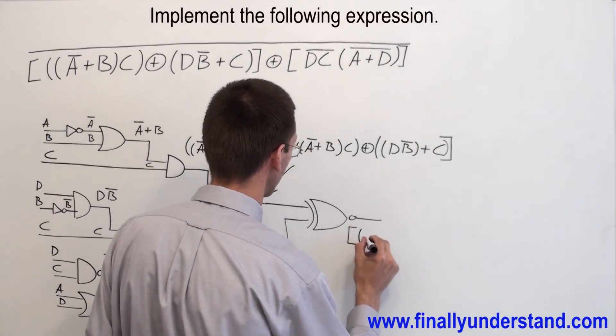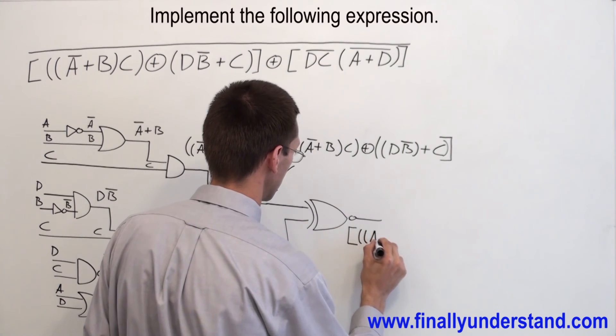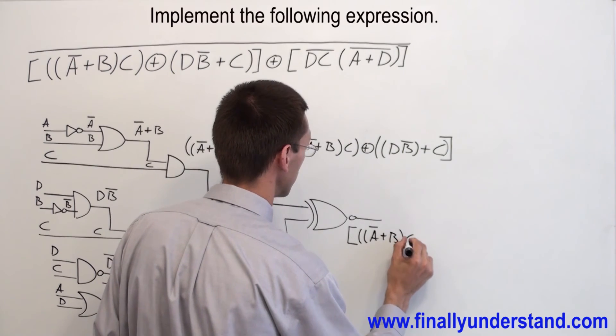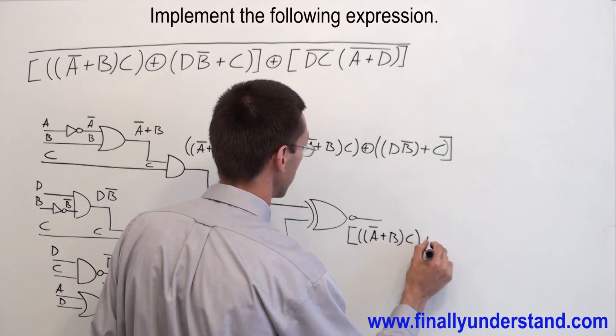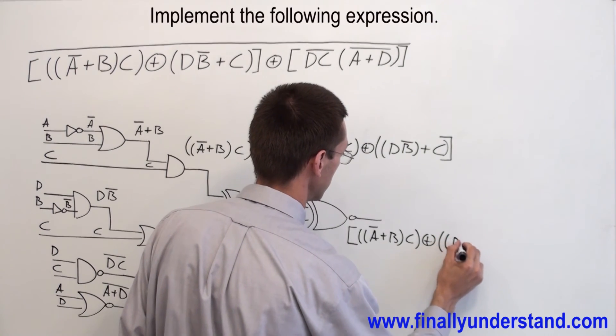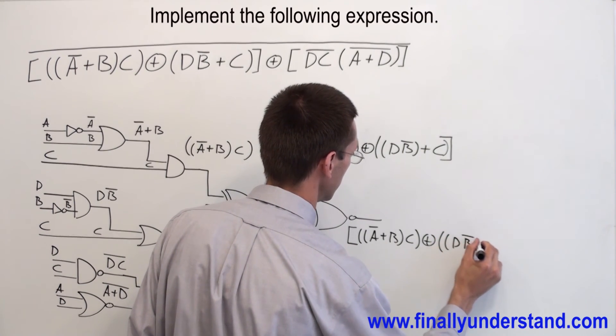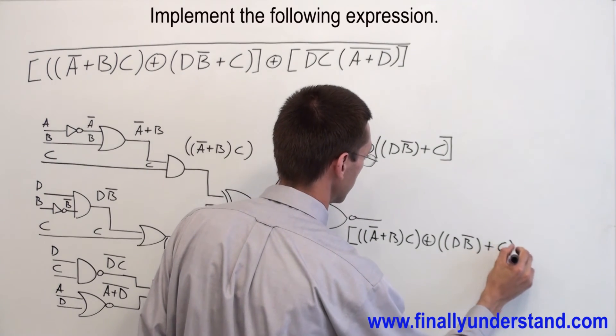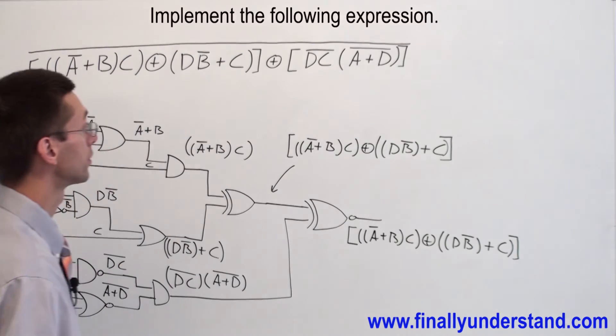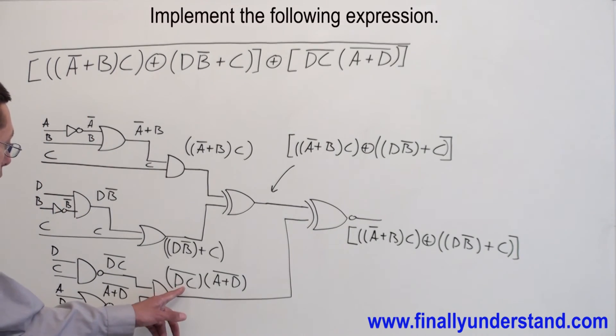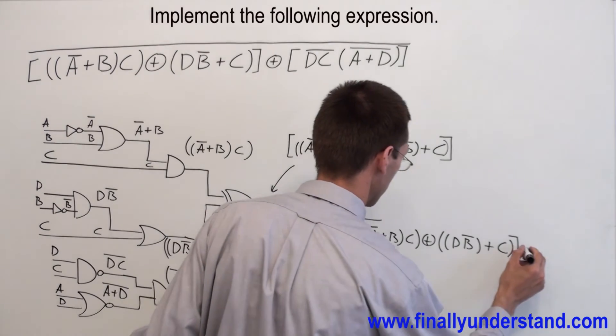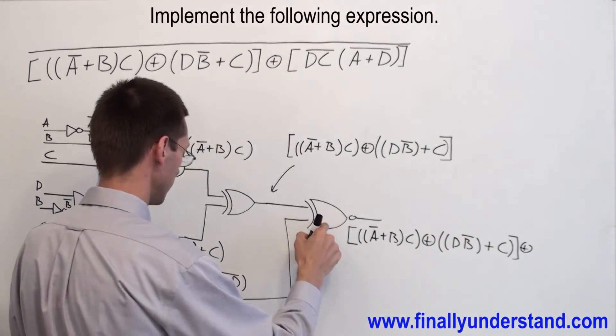Simply, I have to copy whatever is on the first input, exclusively NORed with whatever is on the second input. So that's why I'm going to have open parenthesis, A bar or B, ANDed with C, exclusively ORed with D, B bar or C, close brackets.